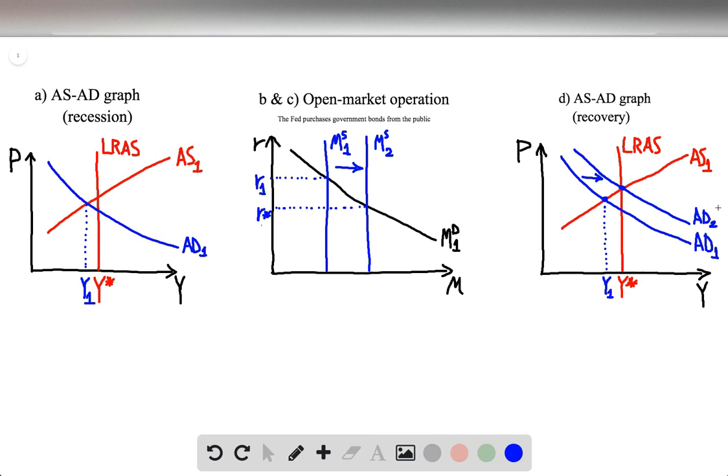As always, the long-run aggregate supply curve will be vertical, since it's determined by long-run factors such as the accumulation of labor, capital, land, resources, technology, and the aggregate productivity level. And it will dissect the x-axis at the natural level of output Y*.